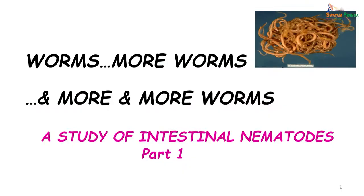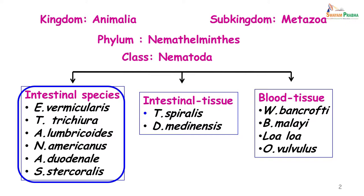Today we will be doing a study of intestinal parasites which are pathogenic to man and we will start with the nematodes. In the kingdom Animalia you have a sub-kingdom called Metazoa, in which in the phylum Nemathelminths you have a class called nematodes.